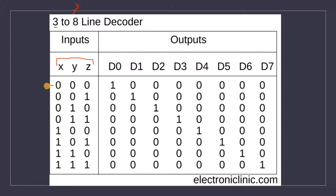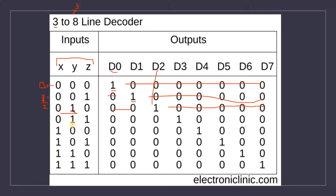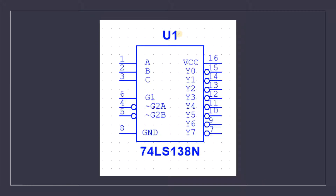The truth table is pretty easy. If the decimal value is 0, then D0 will get 1 and the others will be 0. If the decimal value is 1, then D1 will get 1 and everyone else will be 0. Similarly, if the decimal value is 2, D2 gets 1. If it is 3 then D3 is selected, and so on through D4, D5, D6, and D7 according to the decimal value. This was the 3-to-8 line decoder truth table, but the IC itself is a bit different.